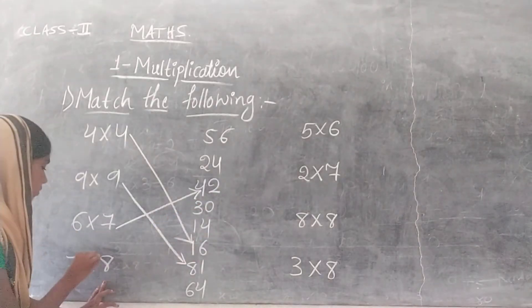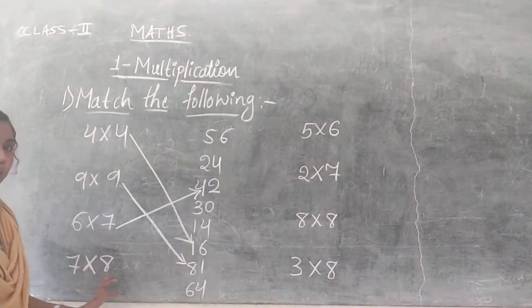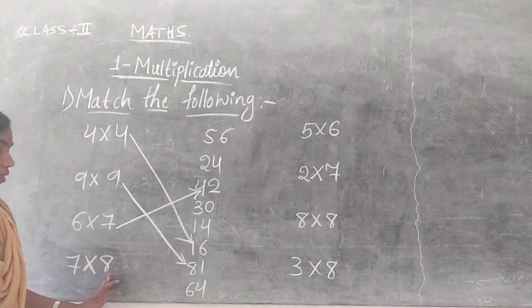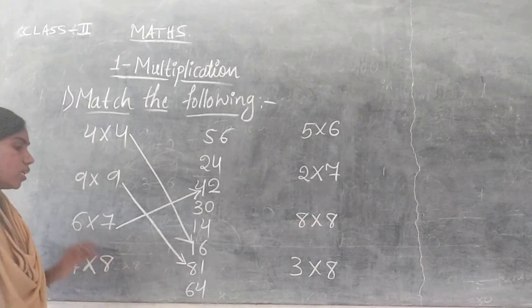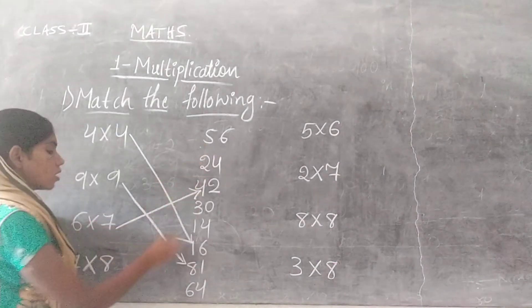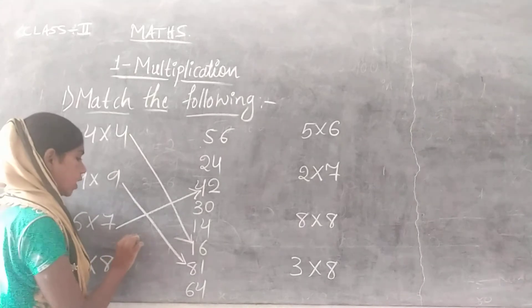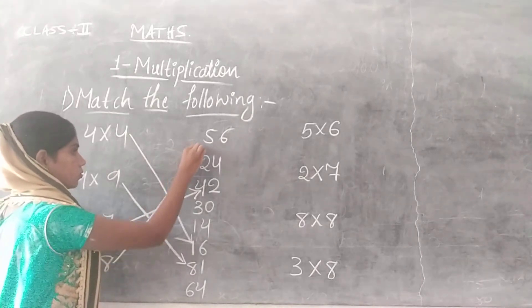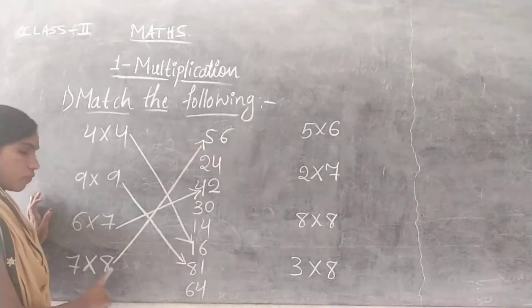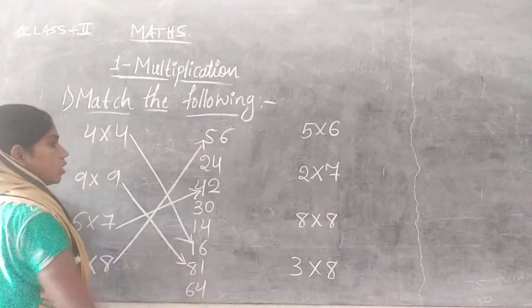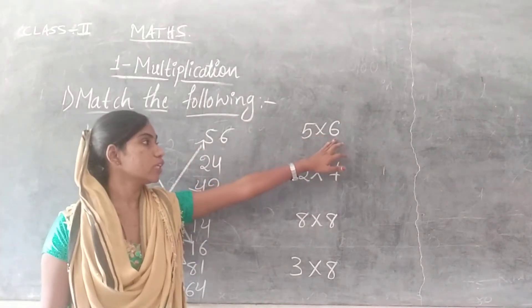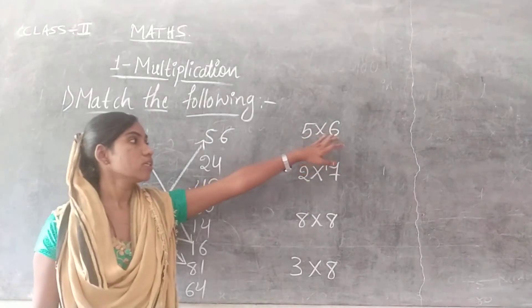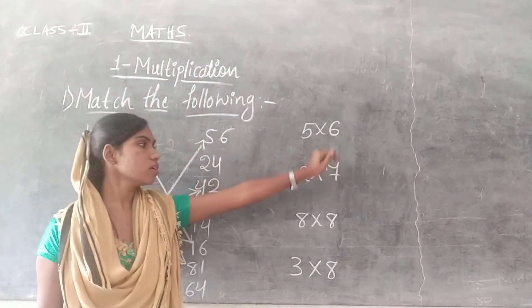The fourth one is 7 into 8. 7 8s are 56. So 56 is here — match for 56. The next one is 5 into 6. 5 6s are 30. Match for 30.